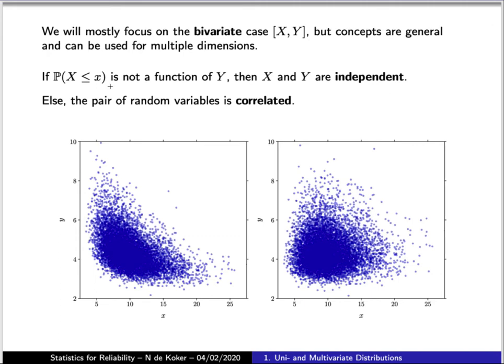If we consider the probability function of a given variable and we find that it does not depend on another variable, that pair of variables are said to be independent. If this is not the case, then that pair of variables are said to be correlated.